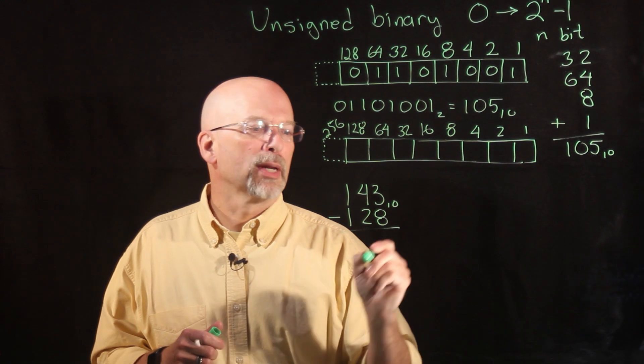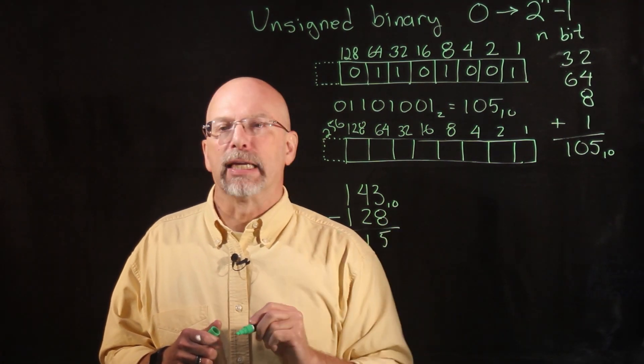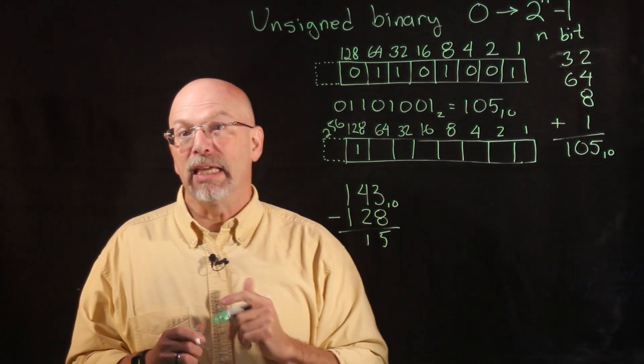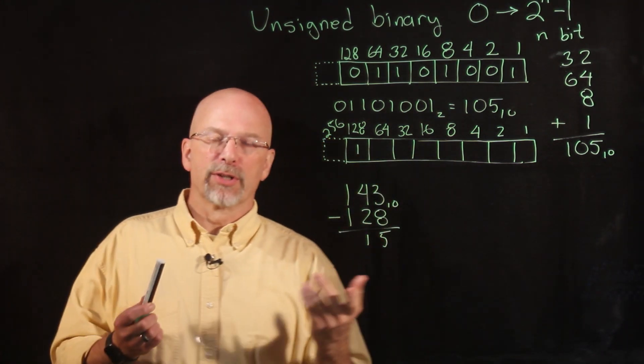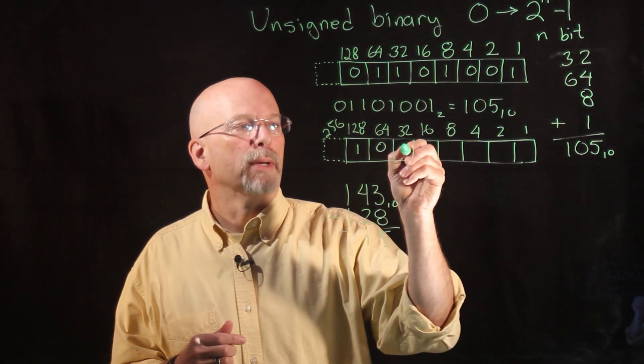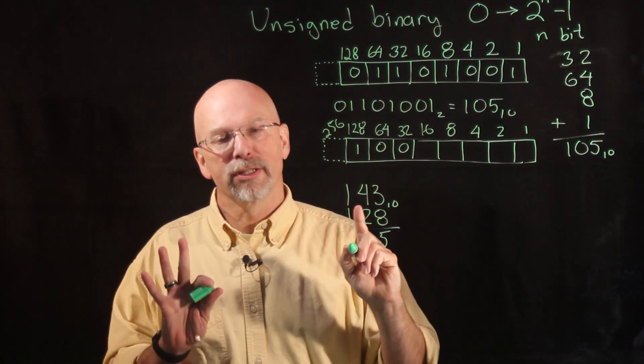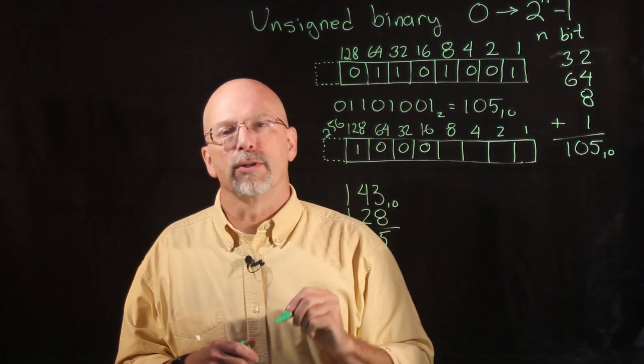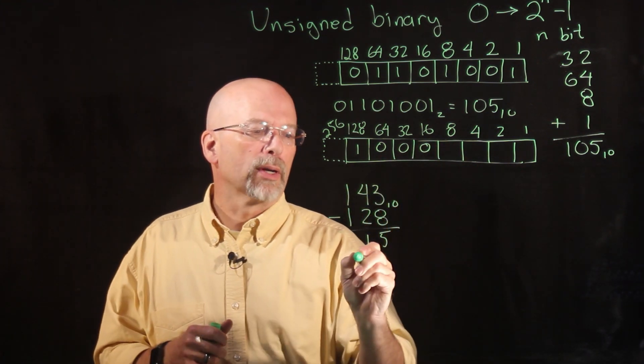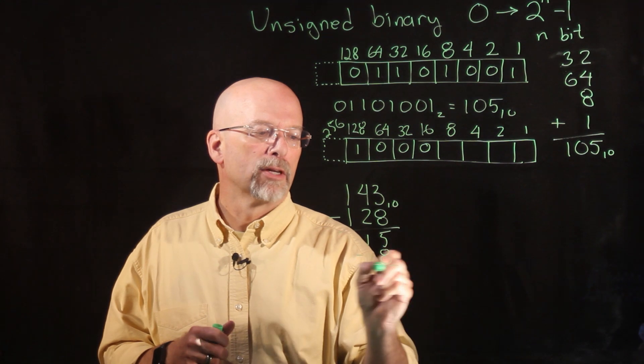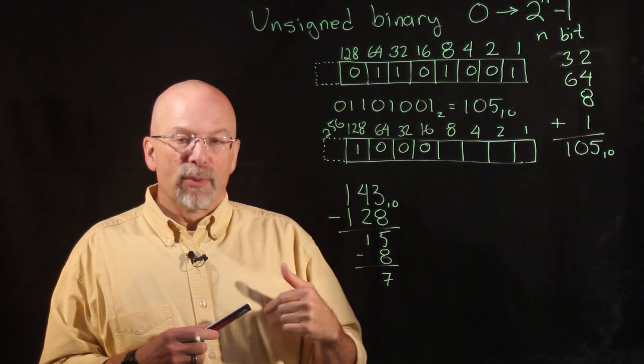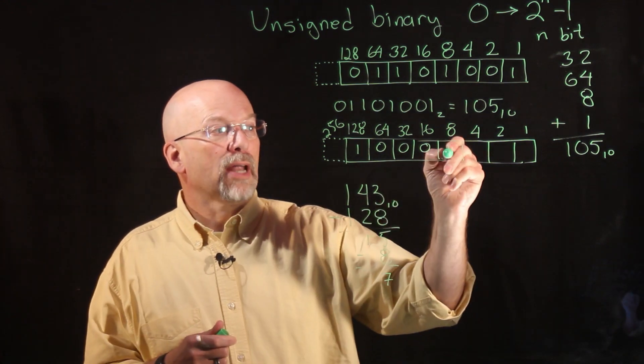Pulling out 128 we get 15, so we turn on the 128 light bulb and we've got 15 watts left to figure out how to represent. 64 too big, there's a zero. 32 still too big, zero. 16 close, still bigger, so we put a zero there. 8 is the next highest power of two we can pull out of 15, so we pull out the 8, we're left with 7.